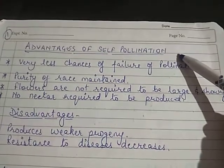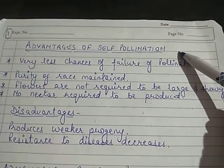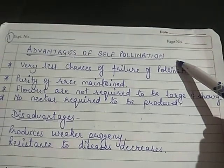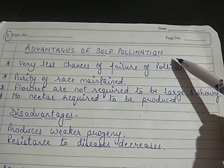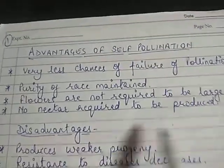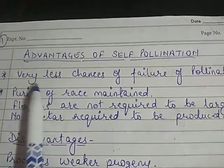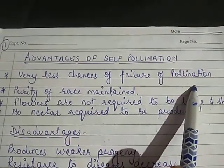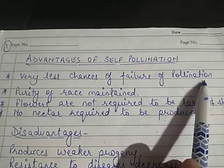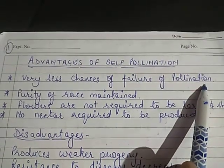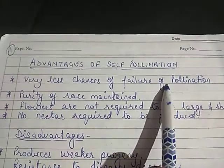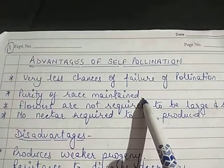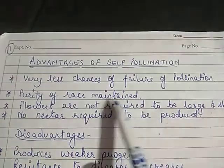Moving ahead, we have the advantages of self-pollination. Why do we say self-pollination is advantageous? Number one: there are very less chances of failure of pollination, meaning pollination is 100% sure — it will never fail.